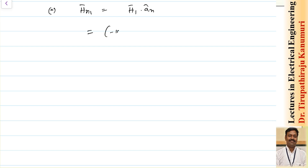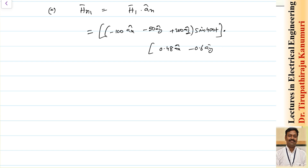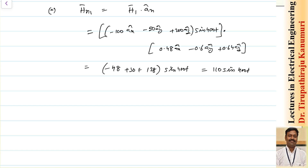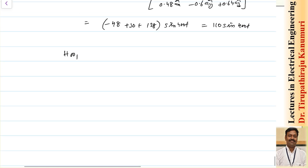The dot product is: (-100 ax - 50 ay + 200 az) sin(400t) dot (0.48 ax - 0.6 ay + 0.64 az). This simplifies to (-48 + 30 + 128) sin(400t), which equals 110 sin(400t). From this scalar value, I can now calculate the vector Hn1.